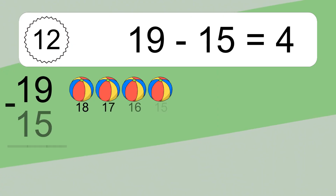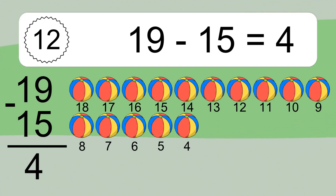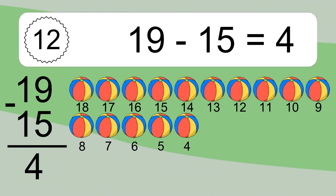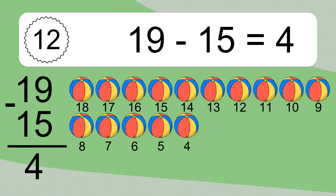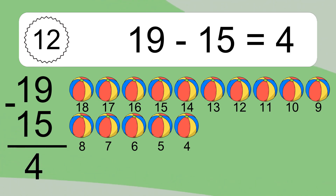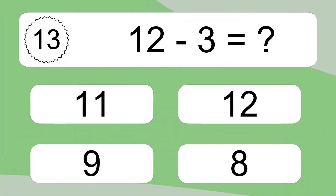19 minus 15 equals what? 19 minus 15 equals 4. Let's count it: 18, 17, 16, 15, 14, 13, 12, 11, 10, 9, 8, 7, 6, 5, 4. 12 minus 3 equals what?